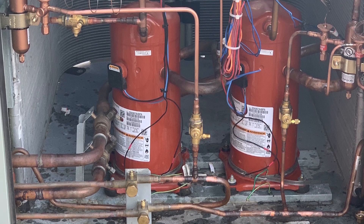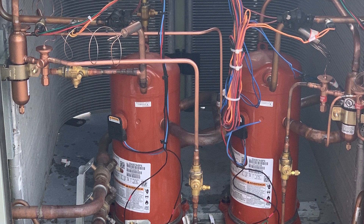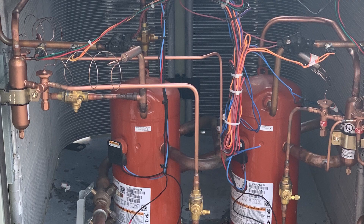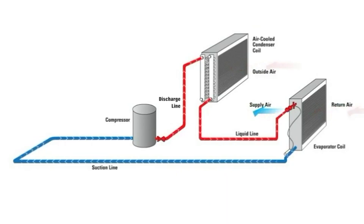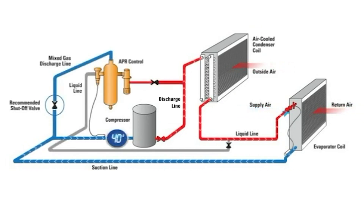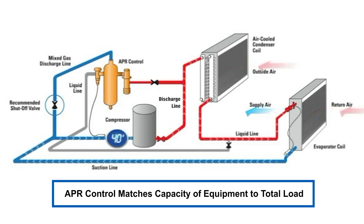If the compressor provides too much cooling capacity for the load or the capacity of the evaporator, it may not be able to evaporate the liquid refrigerant into a gas. During low load conditions such as low airflow or minimum space cooling load, the APR control will vary the cooling capacity of the evaporator coil by modulating refrigerant flow, only sending enough refrigerant into the coil that can be fully evaporated, matching the capacity of the equipment to the total heat load in space.